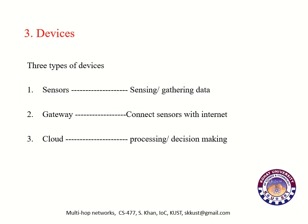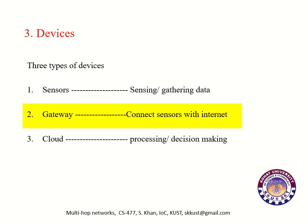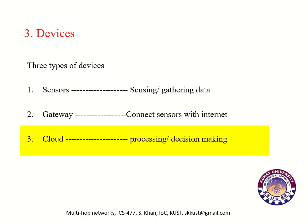Devices used in Internet of Things: there are basically three types. Number one, sensors — sensors are used to sense and gather data from the surrounding environment. Gateway — a gateway is used to connect sensors with the Internet. And cloud — the cloud is used to store and gather all information. The cloud is equipped with heavy computational devices used to process data and make decisions about the data.